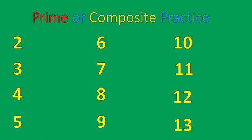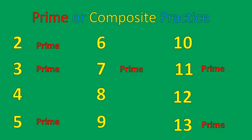Welcome back. Hopefully you paused the recording and were able to look at all these numbers. I'm going to go through first the prime numbers in this list. Three is a prime number. Two is a prime number. Five is a prime number. Seven is a prime number. Eleven is a prime number. Thirteen is also a prime number. These are the prime numbers — they can only be divided evenly by themselves and one.